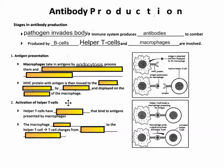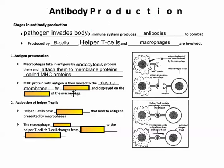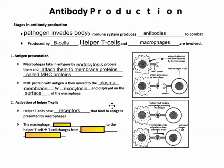Macrophages take in the antigens by endocytosis, process them, and present them like trophies on an MHC protein — which stands for major histocompatibility complex. The MHC protein with the antigen is then moved to the plasma membrane by exocytosis and displayed on the surface of the macrophage.